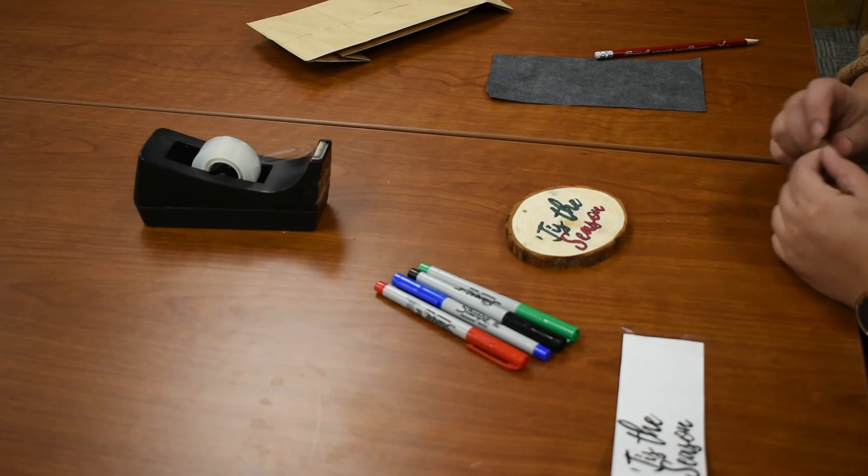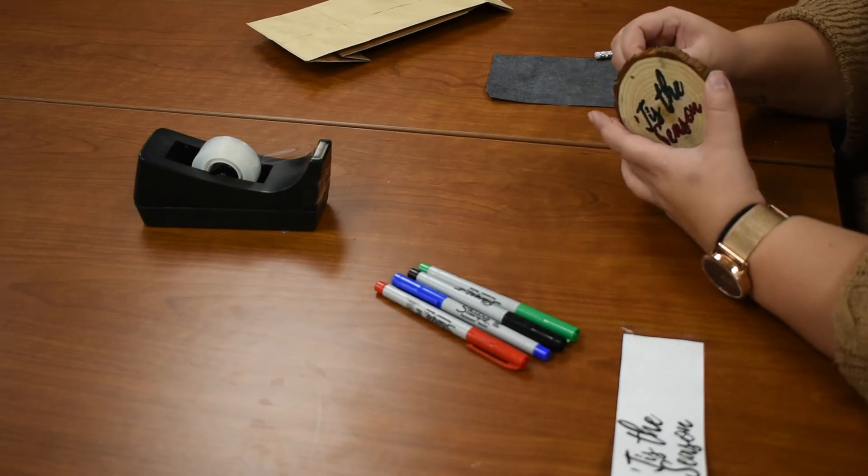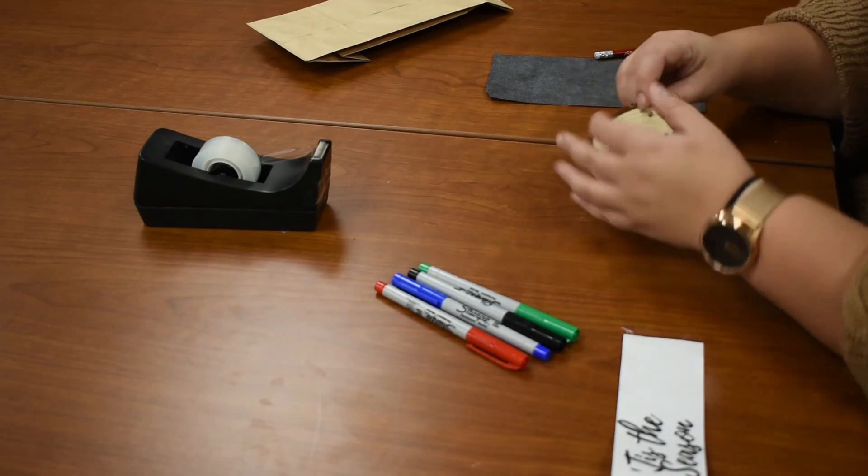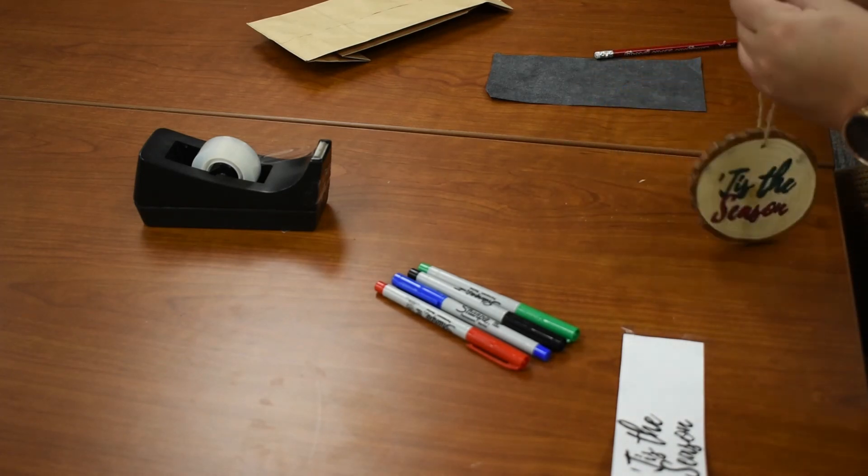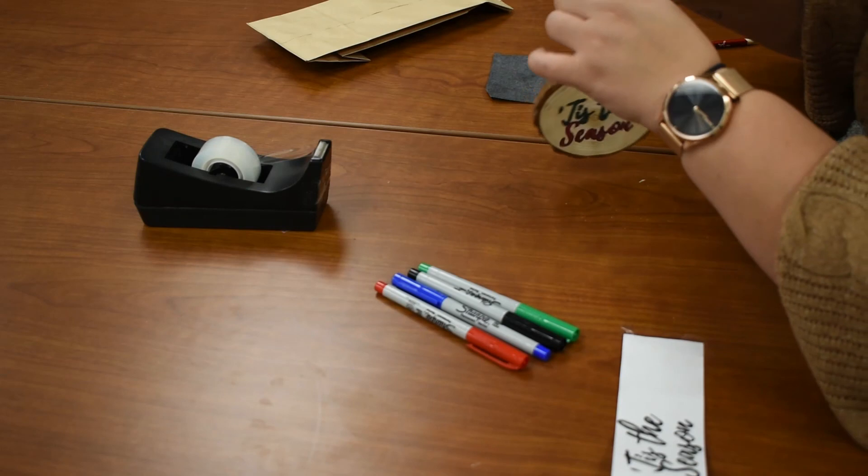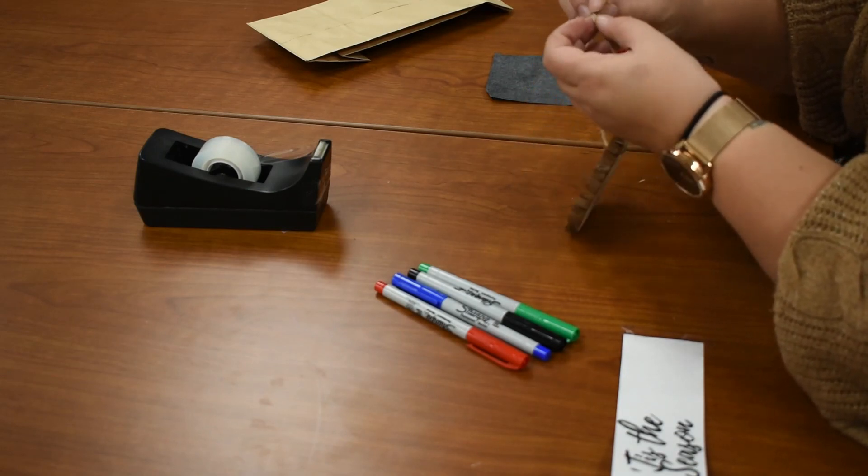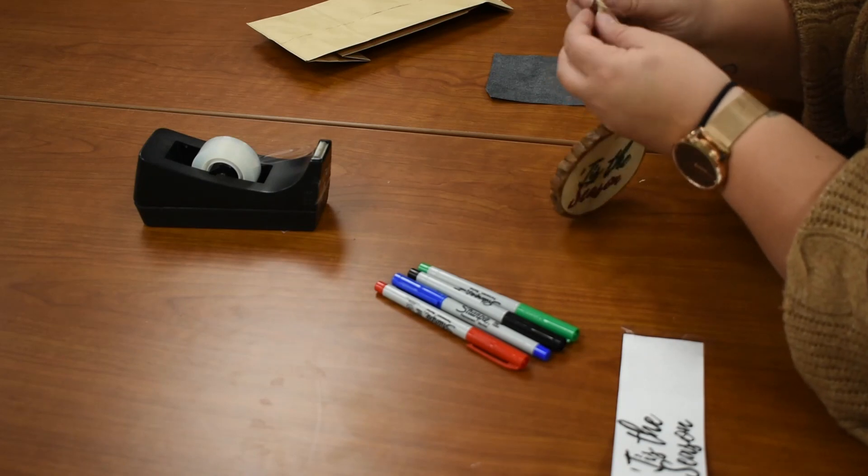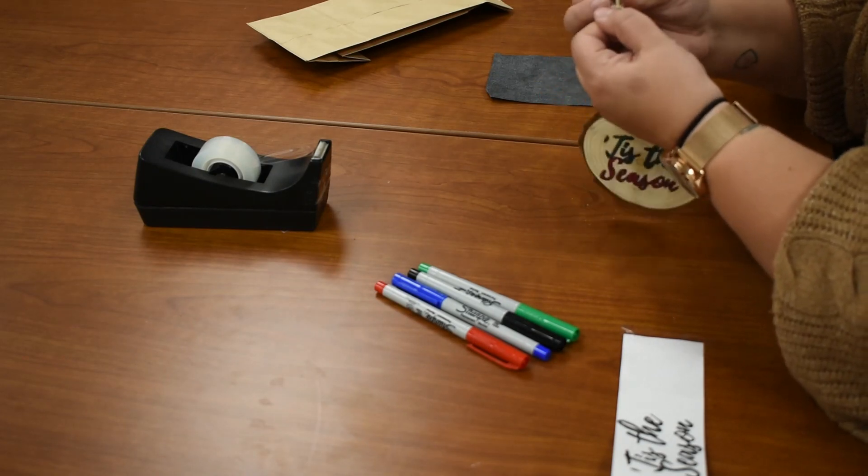Now that I'm done touching it up, you can seal it if that's something you want to do, otherwise you can just leave it as is. Feed your twine through, get it however you like, the length you want it at, and tie it off nice and tight.